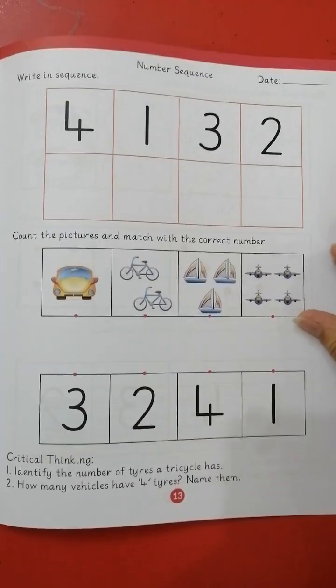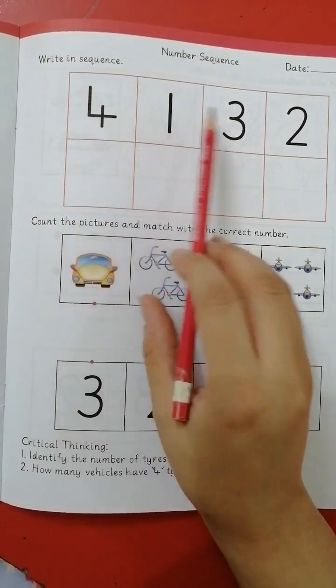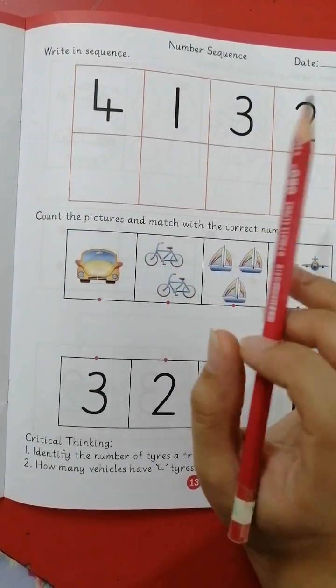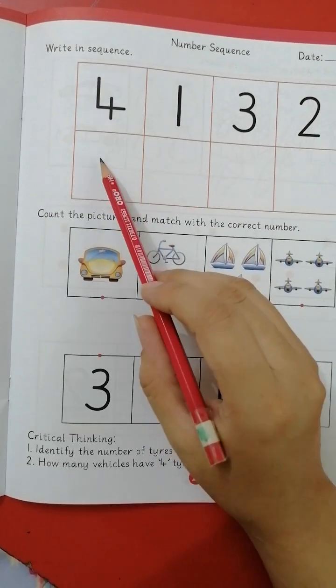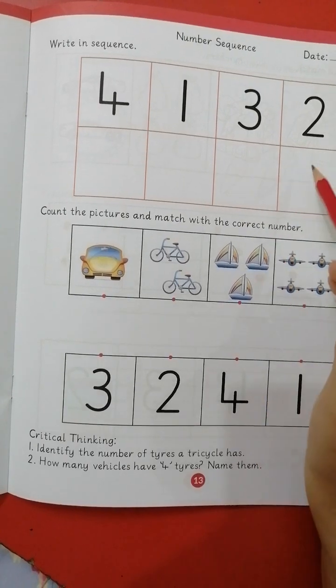Next is number sequence. Write in sequence. We have given number over here: four, one, three, two. Which number comes first? One, then two, three, and four. You have to do it sequentially.